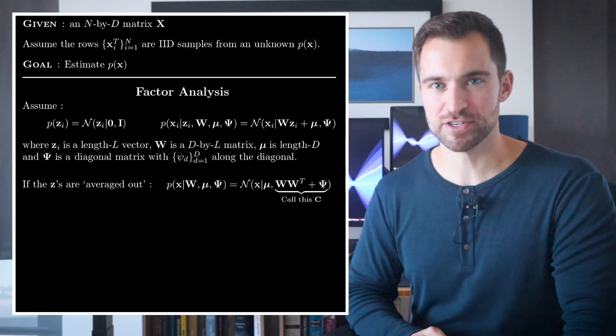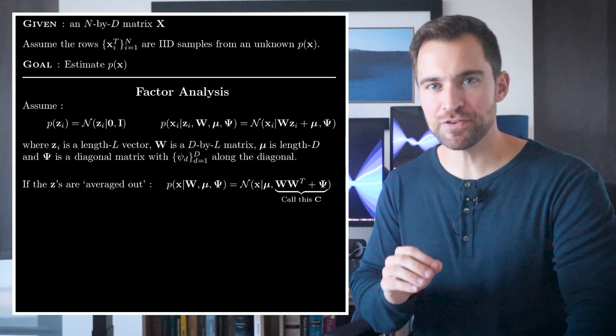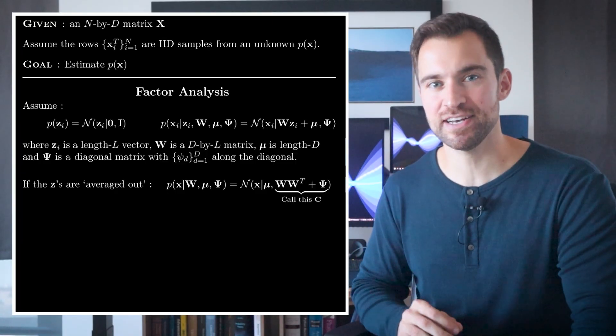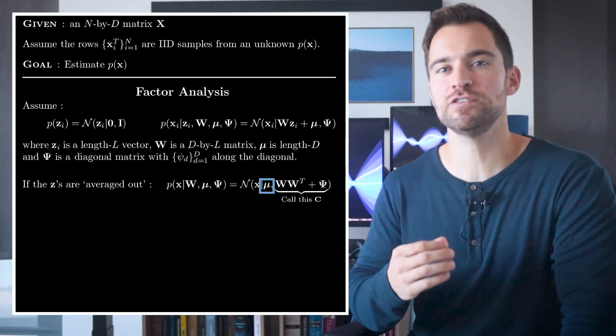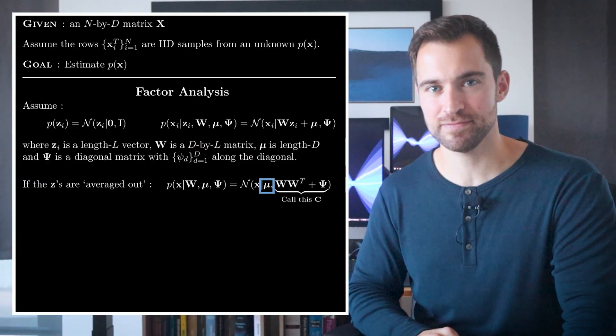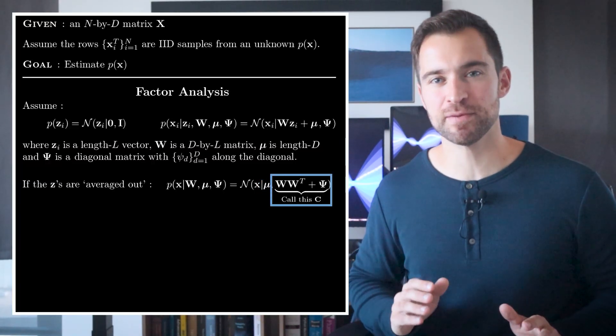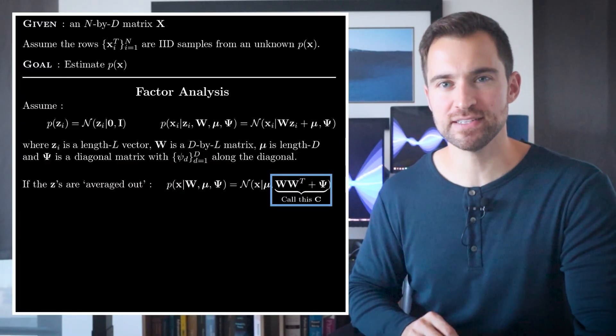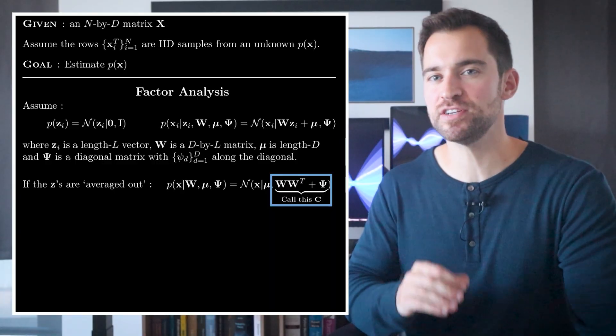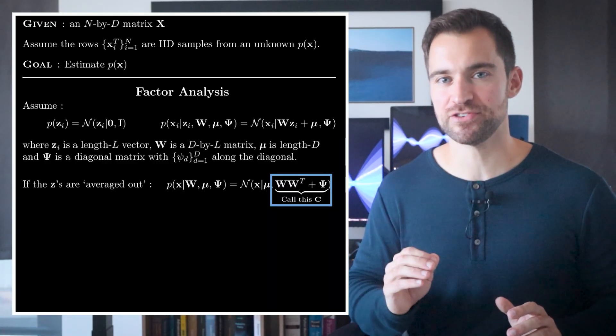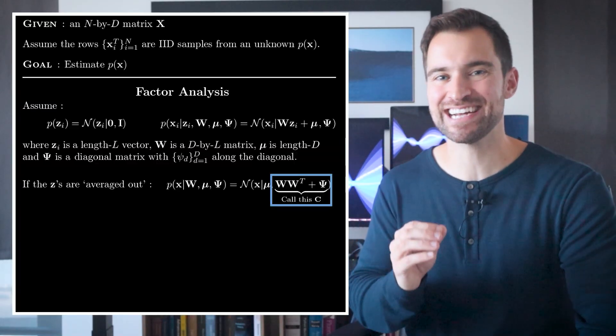Now, let's inspect this expression. First, we notice that the overall mean of any X after you average out all the Zs that could produce it is just mu. That's nice. It's the same thing we'd use if we were just fitting a plain multivariate normal. But here's the interesting part. The covariance matrix of X after the Zs have been averaged out. We'll call this C. We see it has two terms. One is the outer product of W, and the other is the diagonal psi matrix. So, these two together are our approximation to X's covariance matrix.